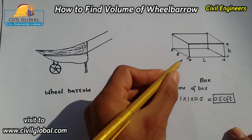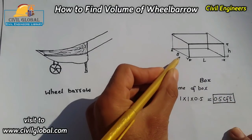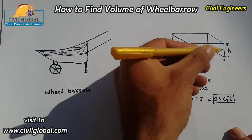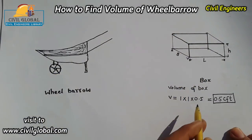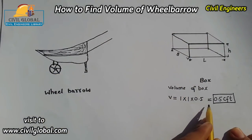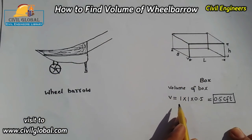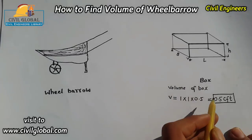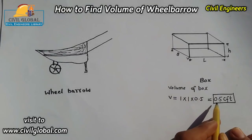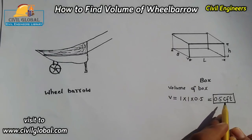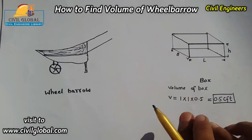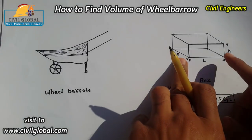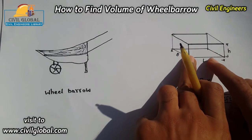Suppose this box has a length of 1 foot, a height of 0.5 feet, and a breadth or width of 1 foot. So the volume of this box is: 1 × 1 × 0.5 = 0.5 cubic feet (cft).